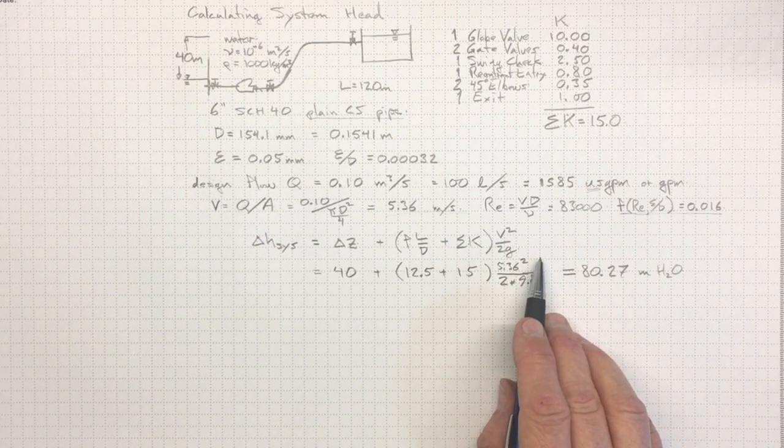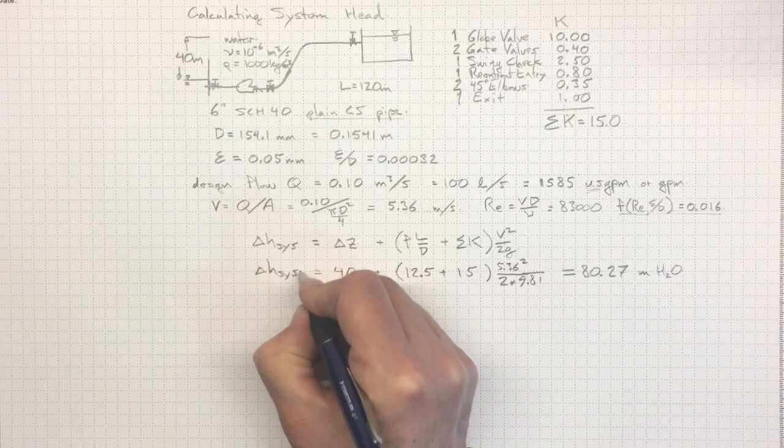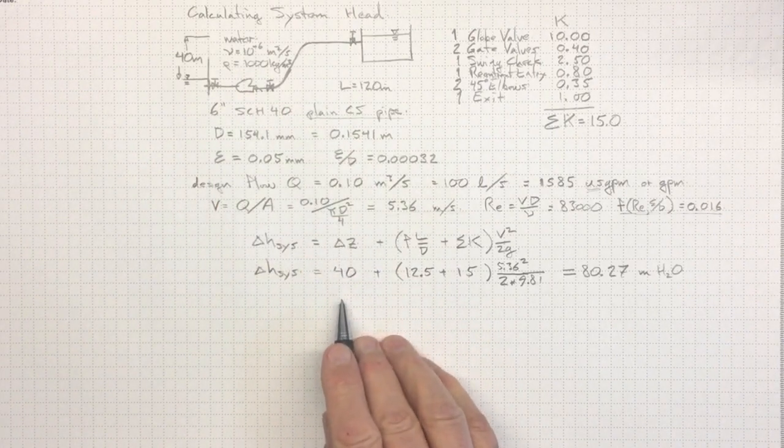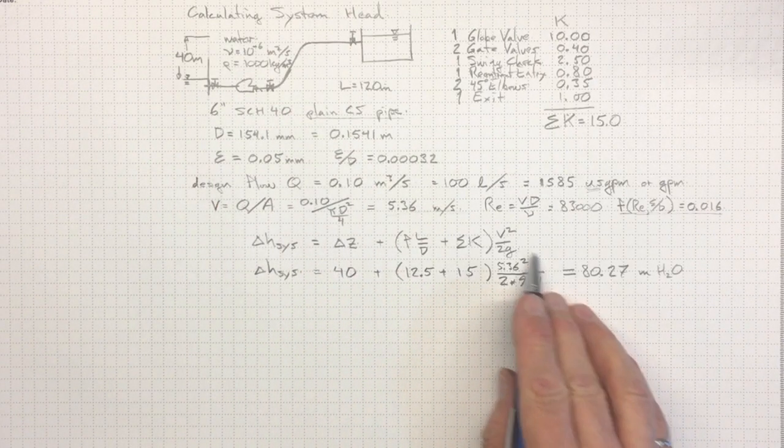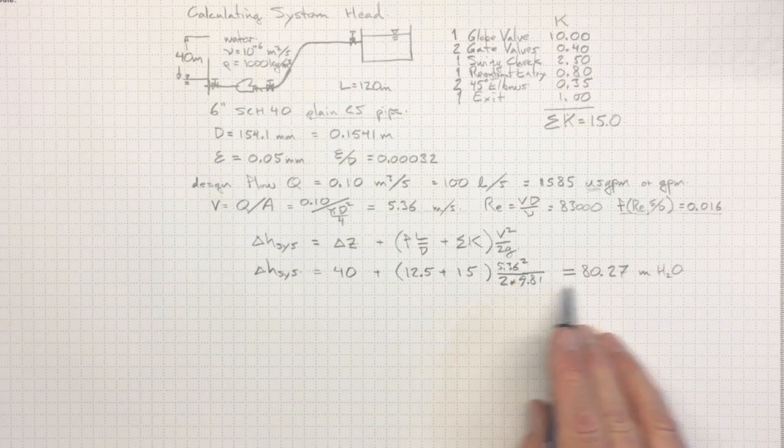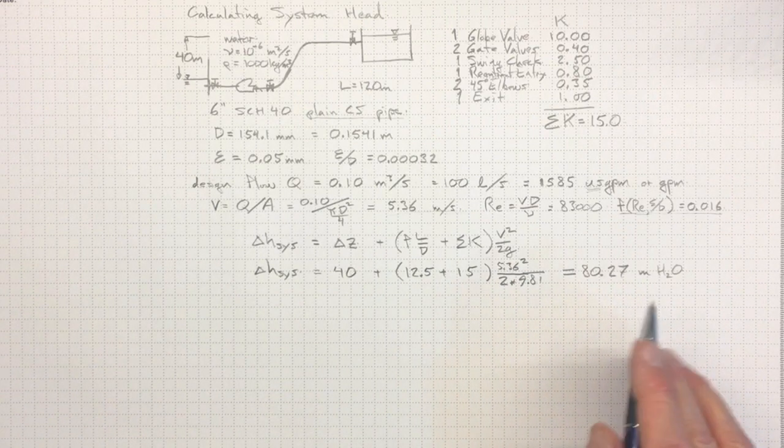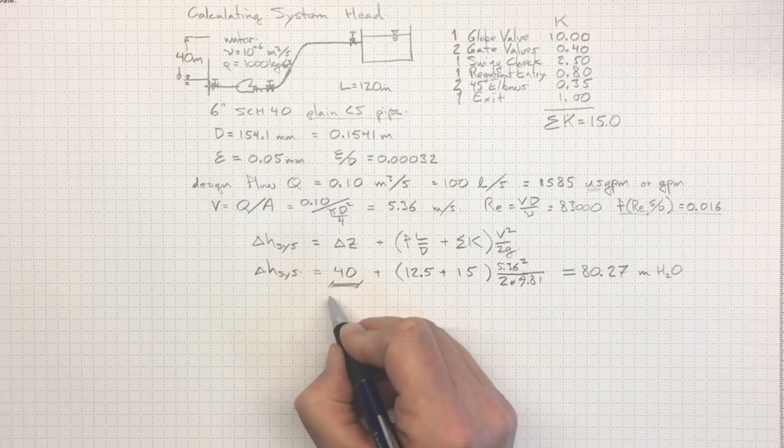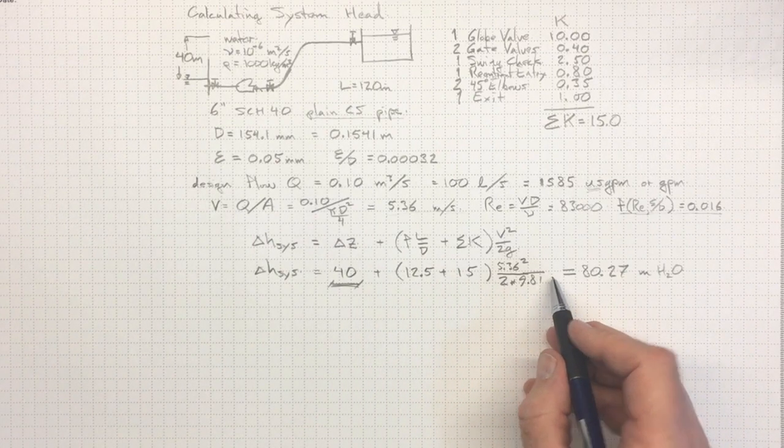So, let's look at that for a moment. This delta H sys, the work that I'm going to have to get the pump to do to raise the head across the pump, it's going to be 40, plus 12.5, plus 15, times the V squared over 2G. It's going to give me about 80.27. So, about half of that is overcoming the elevation and doing useful work. And the other half, roughly, is going into losses.